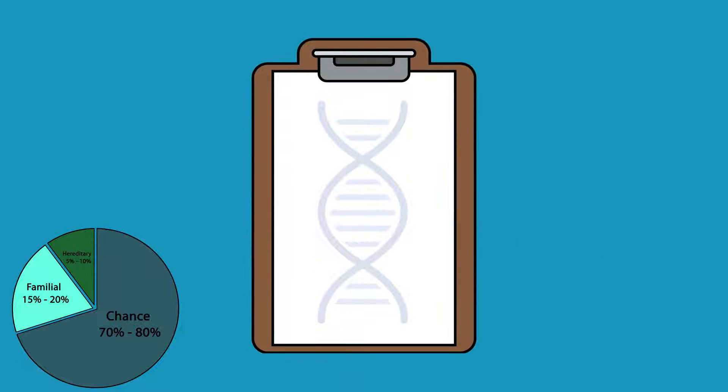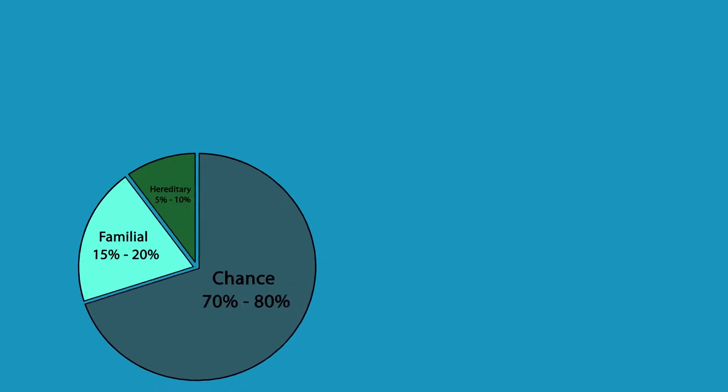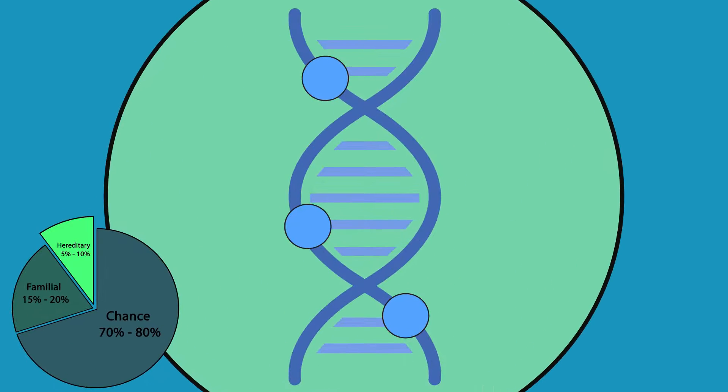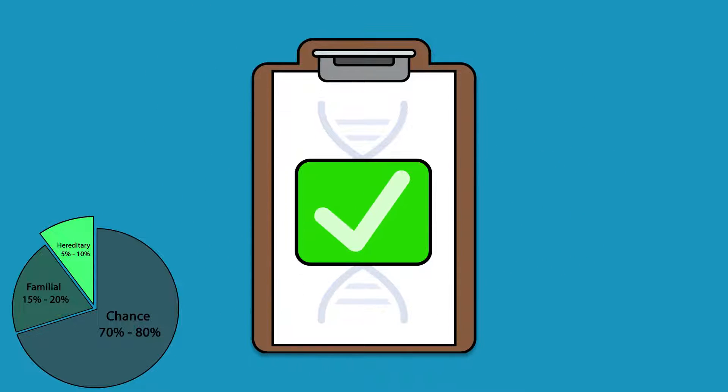Unfortunately, we cannot test for the genetic factors that cause familial cancer. Only 5 to 10% of cancers have a hereditary cause. These cancers happen because of a gene that is not working properly and can be passed along in a family. Genetic testing can be used to find out if the cancer in your family has a hereditary cause.